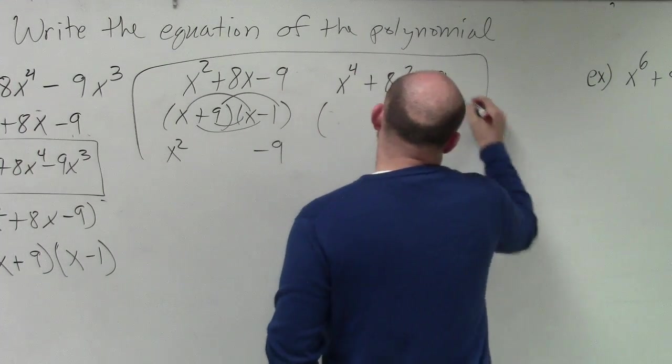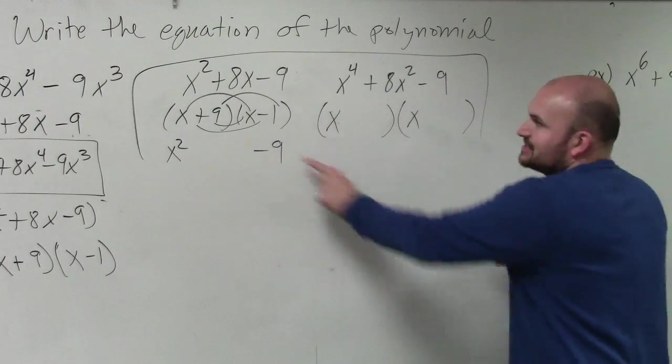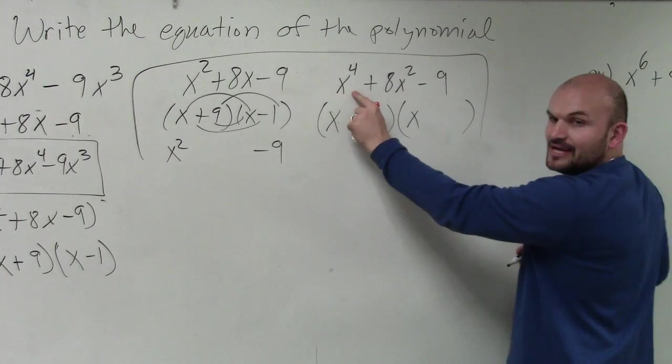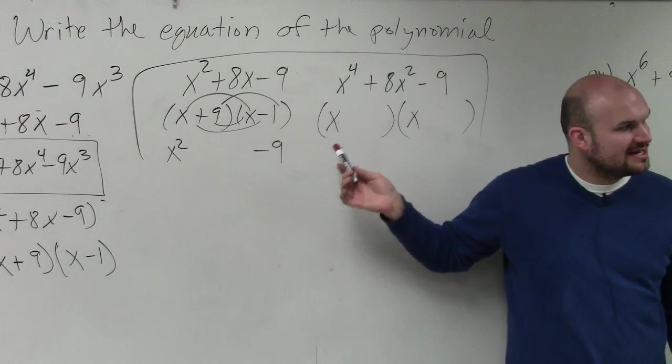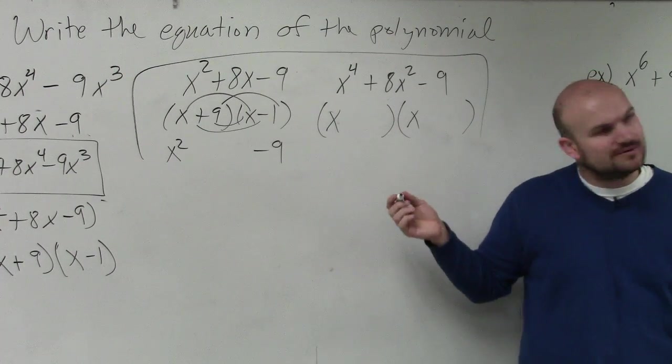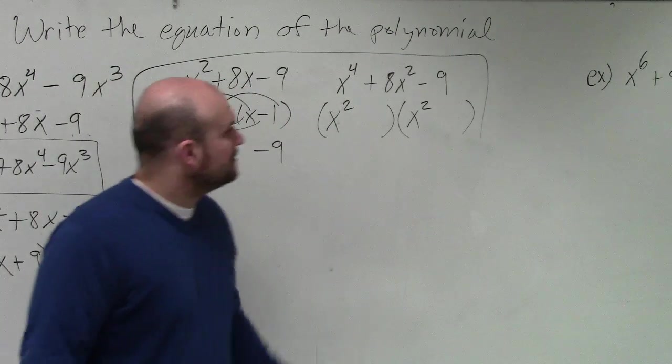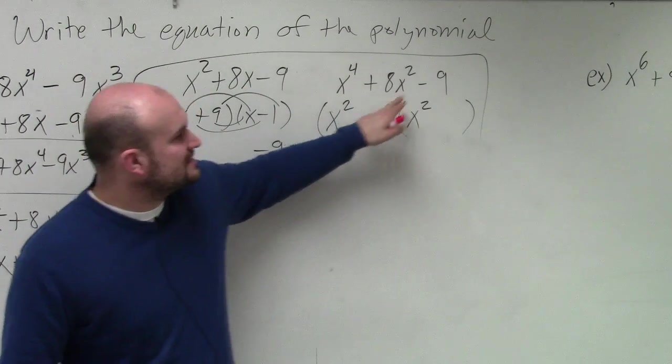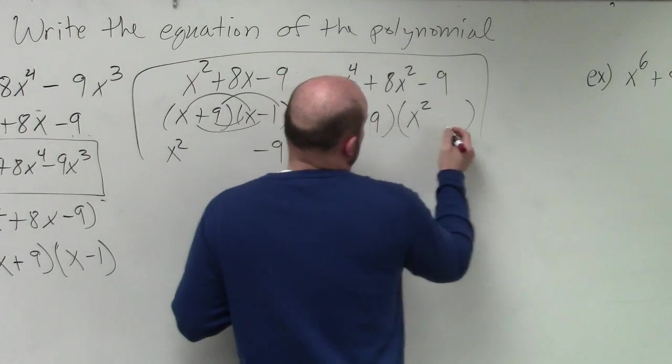So in this example, I can't use x and x, because x times x gives us x squared. x times x does not give us x to the fourth. However, if I change the power of x, I can get x to the fourth. So what should I use to multiply x squared? Then what terms should I use? I can use the same terms for negative 9, or to give positive 9 or negative 9.